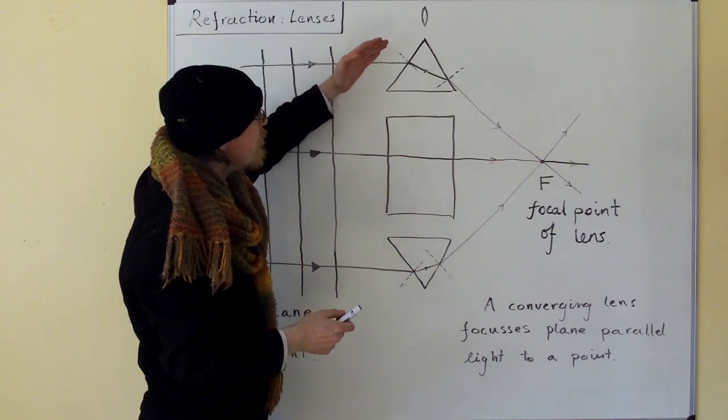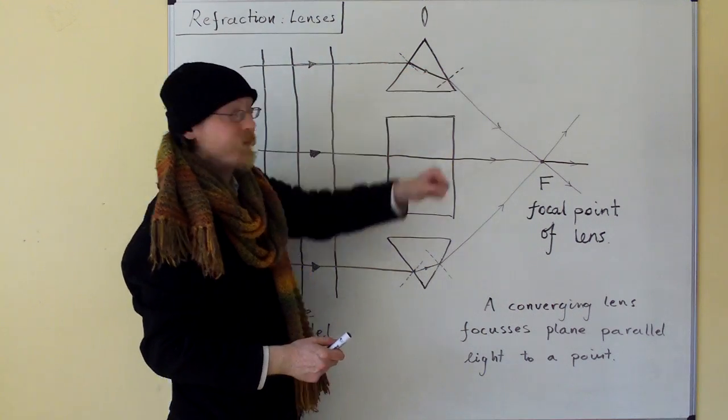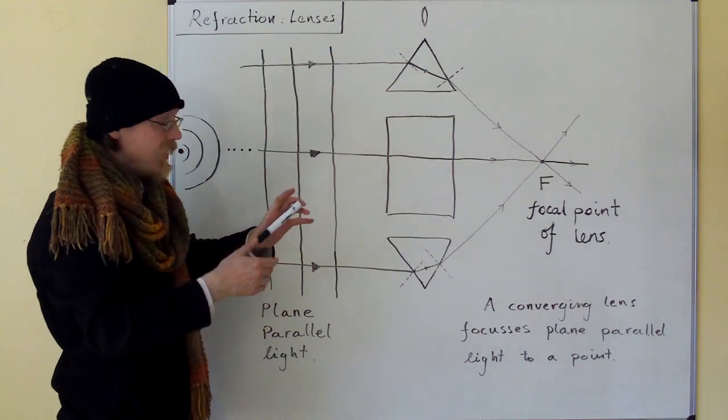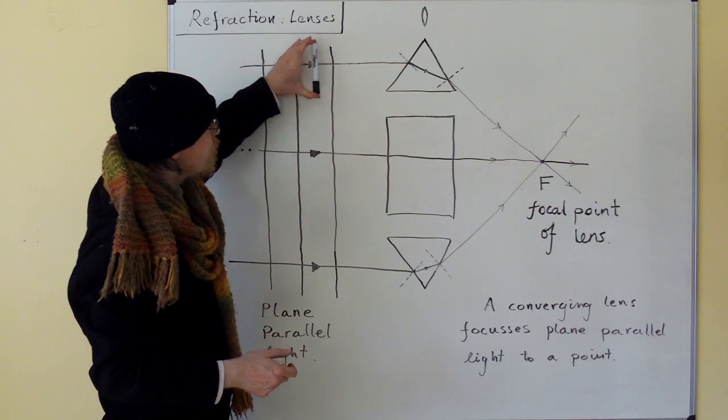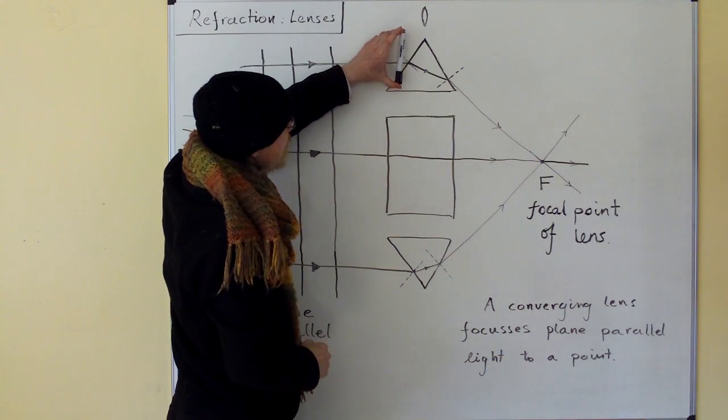So the light is bent first towards the normal, and then away from the normal. But you can see it's simpler by looking at the wave front. Here comes the wave front, it gets slowed down.